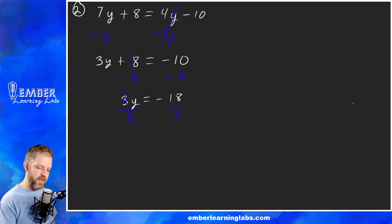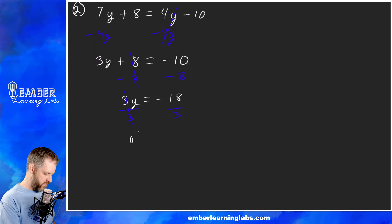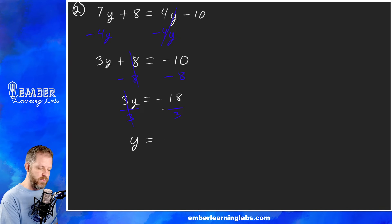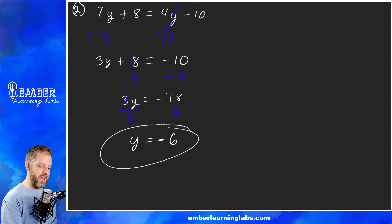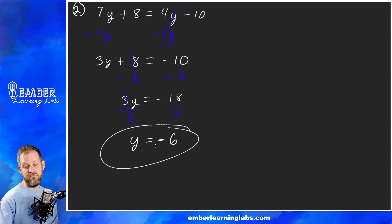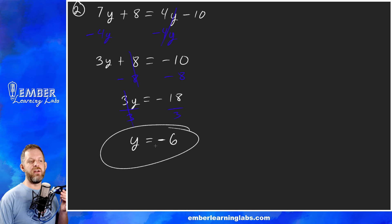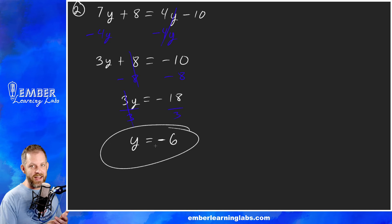Last step: we have 3 multiplied onto y, so we divide by 3 on both sides. Those 3's cancel, leaving y by itself. Y equals negative 6, because 18 divided by 3 is 6, and negative divided by positive is negative. So when you have variables on both sides, get them on one side and then it's business as usual.